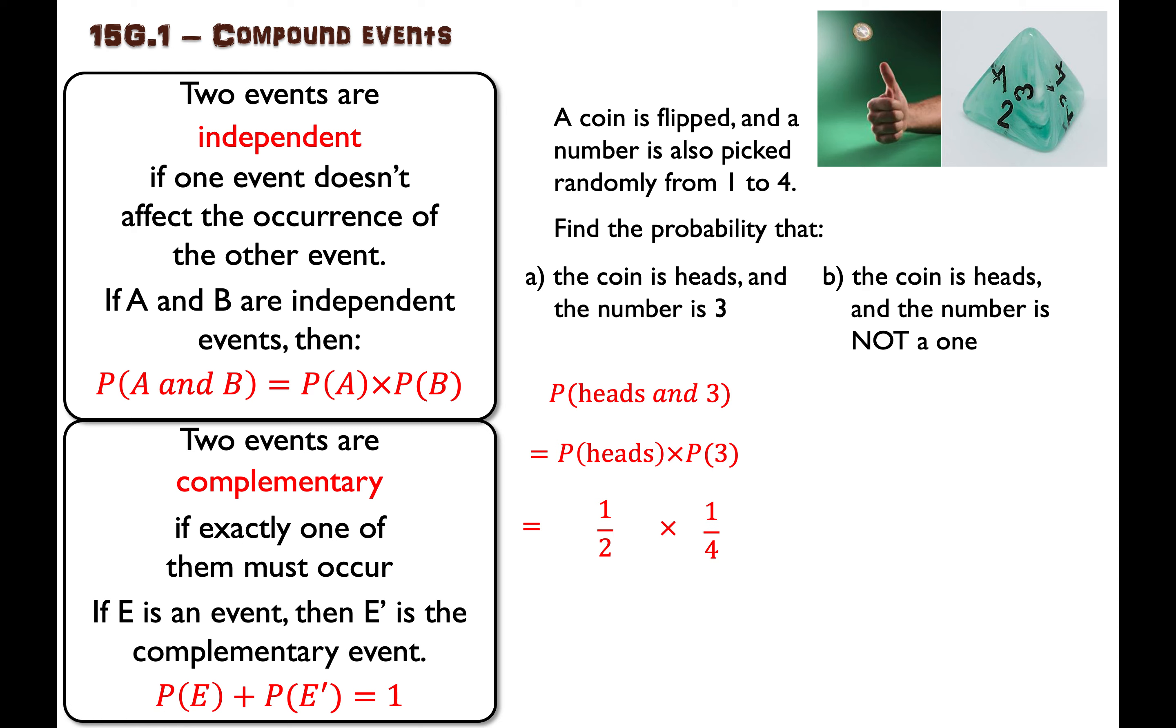Well, exactly one of those numbers is a number three. So that is one outcome out of four that match what you're looking for. So now we can just multiply these together. One times one is one on the numerator and two times four is eight on the denominator.